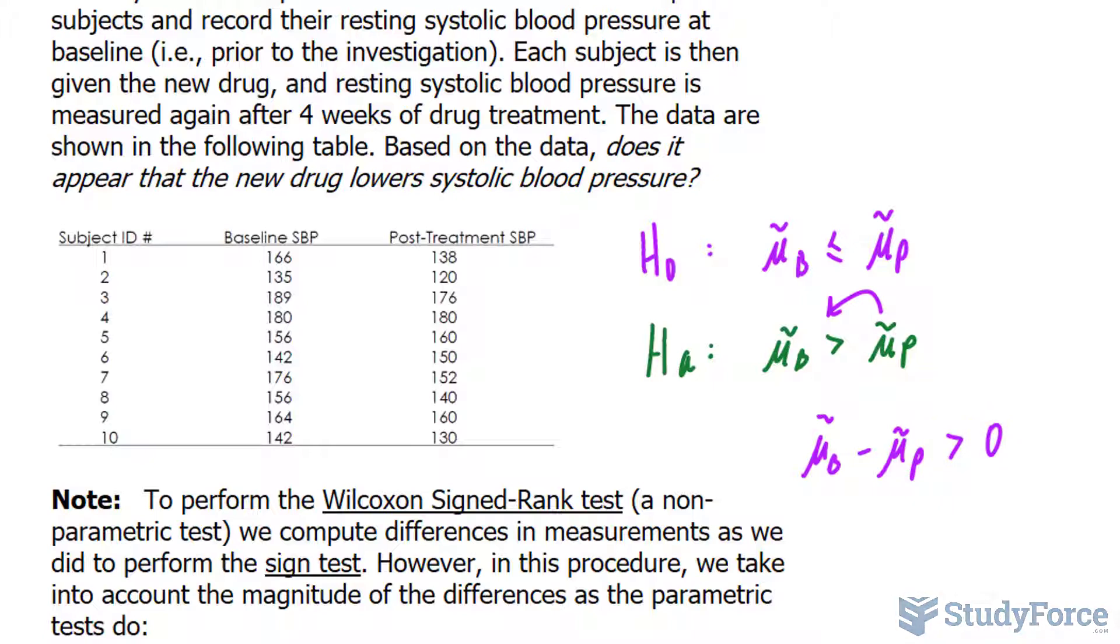One more thing to keep in mind is that we wrote the alternative in terms of the baseline being greater than that of the post. So this is an upper-tail test. If we had written in terms of equals and not equals to, then it would be a two-tail test.